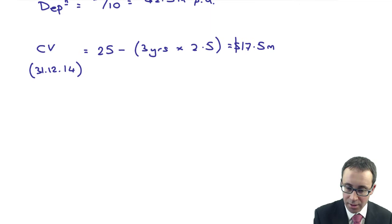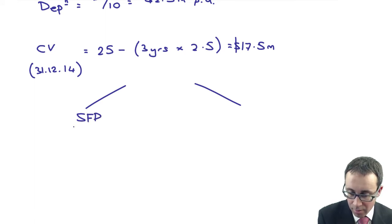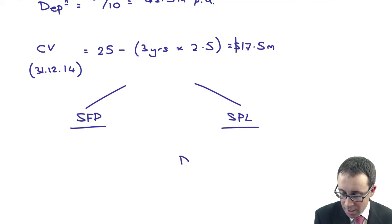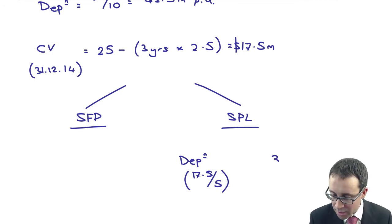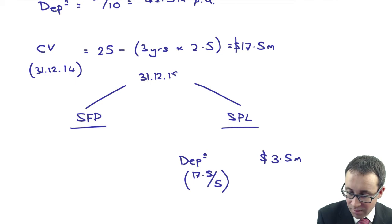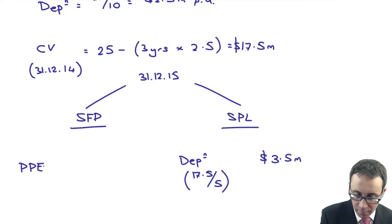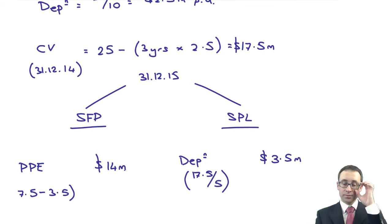We need to put that into the financial statements — looking at the SFP and the statement of profit or loss. In the statement of profit or loss, we have the depreciation, which is your carrying value divided by the new remaining life. So my depreciation is now $3.5 million for the year ending 31st December 2015. In terms of the SFP, property, plant and equipment is 17.5 less 3.5, which is $14 million. So in the SFP you need to get a figure of 14, and the depreciation is 3.5.